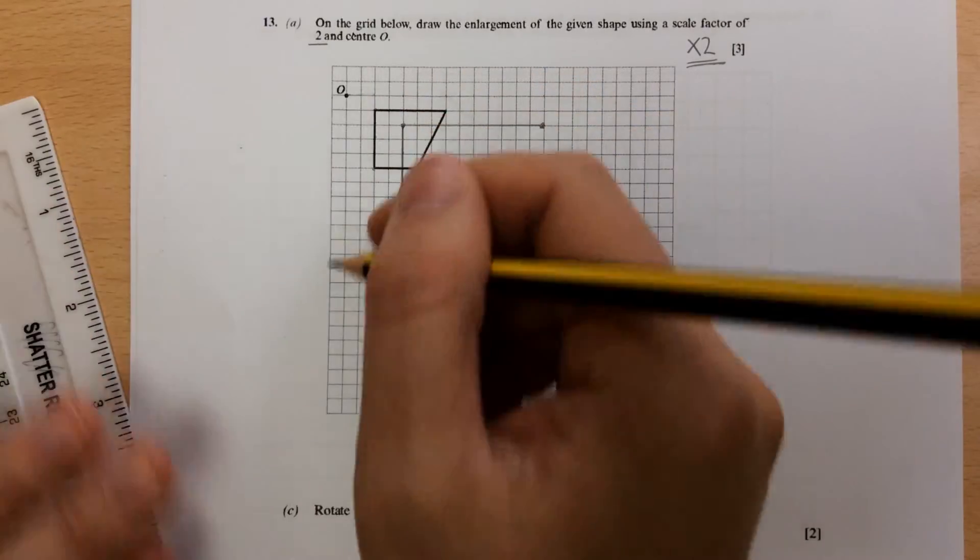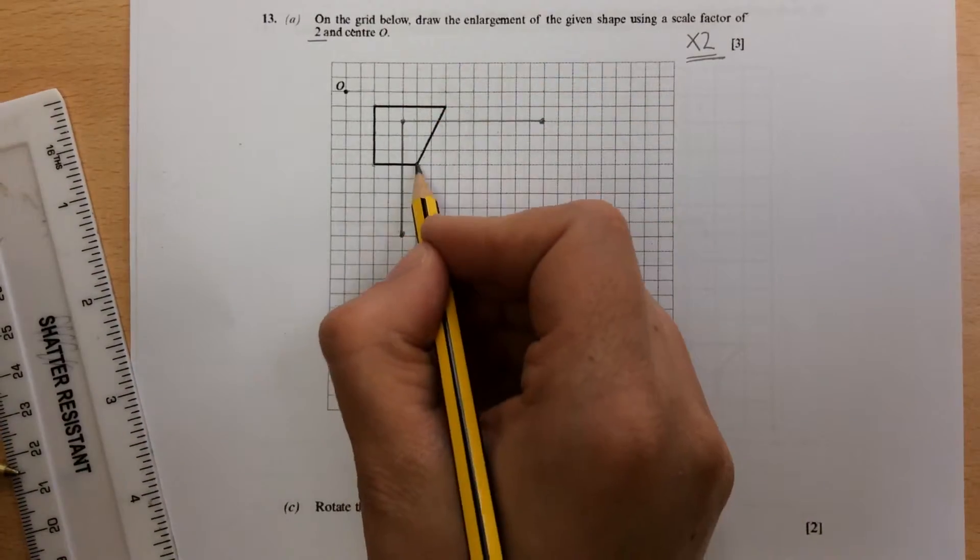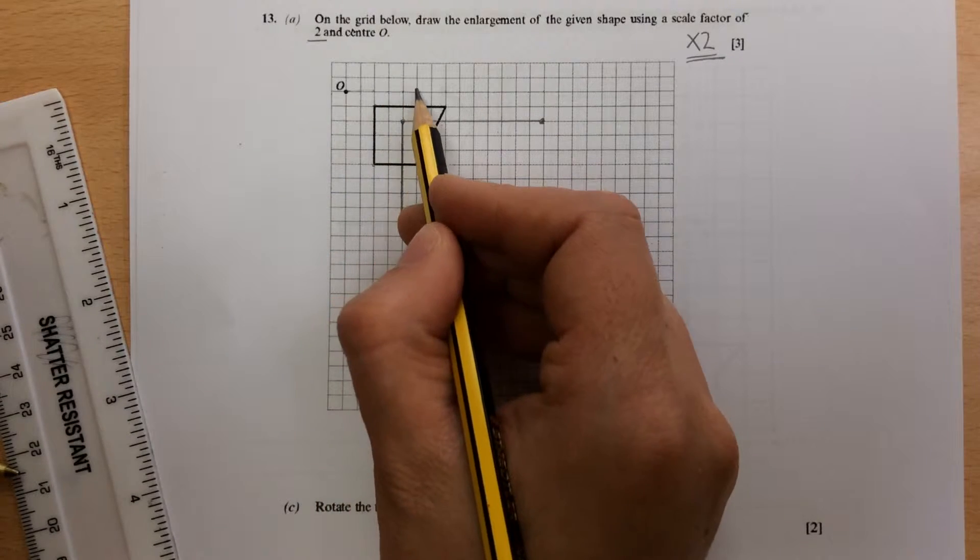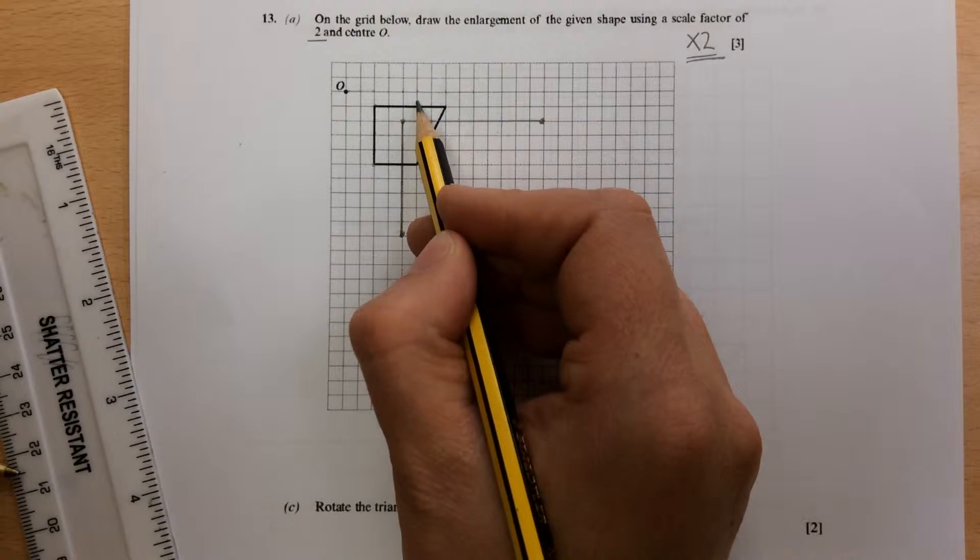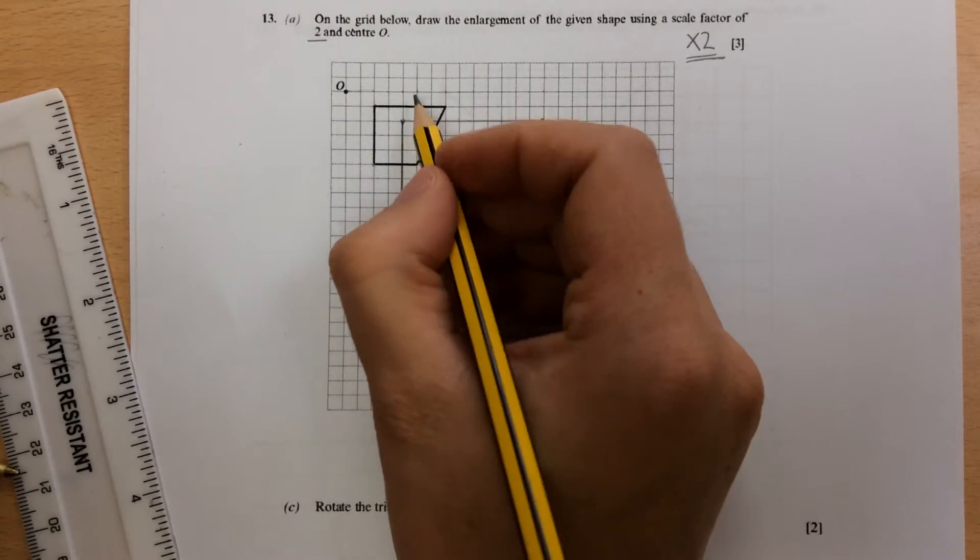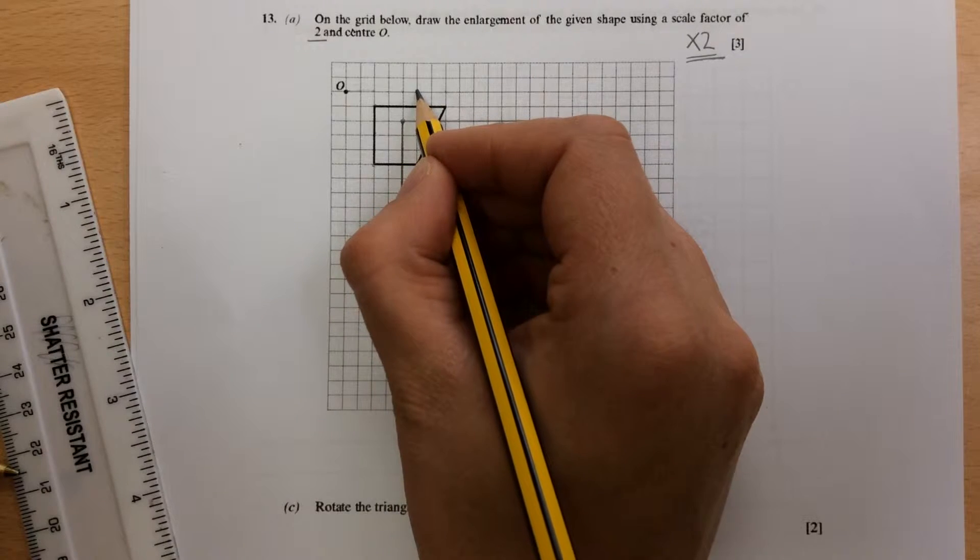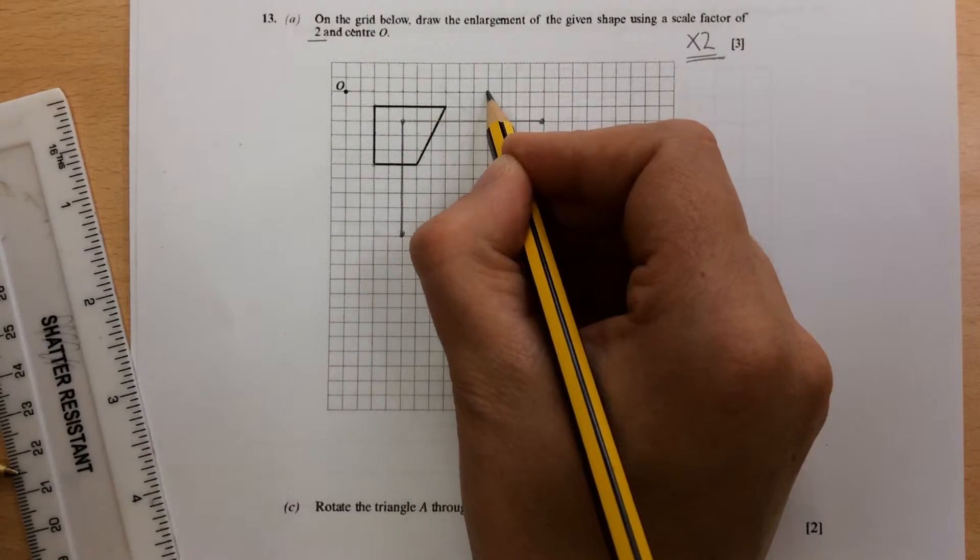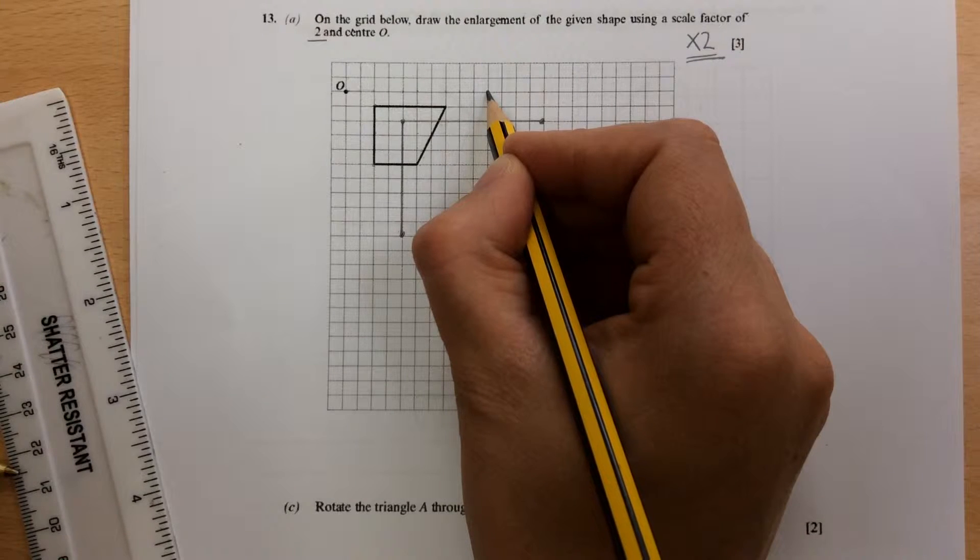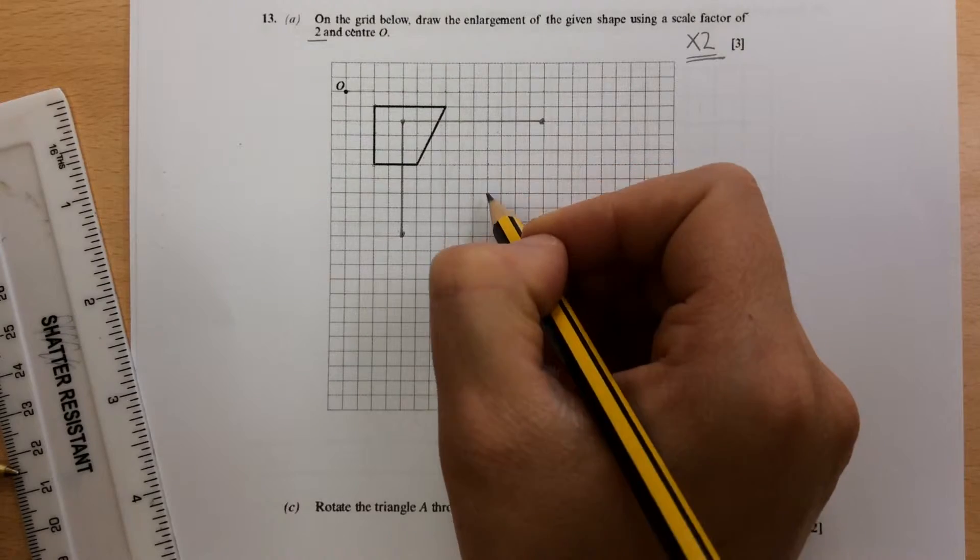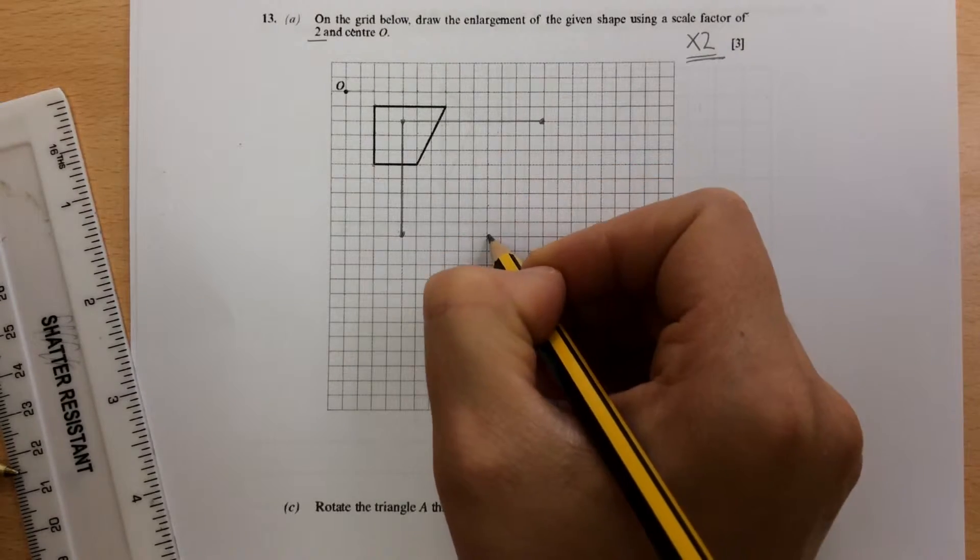Again, if you're more confident, draw the shape. If you're not, do the next point. 1, 2, 3, 4, 5 across. 1, 2, 3, 4, 5 down. So 5 across is now going to be 10 across. So 5, 6, 7, 8, 9, 10. And 5 down is going to be 10 down. So 1, 2, 3, 4, 5, 6, 7, 8, 9, 10.